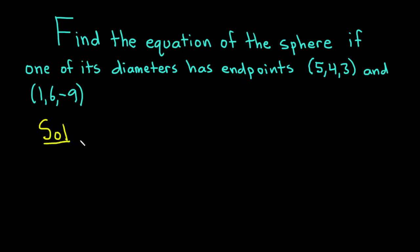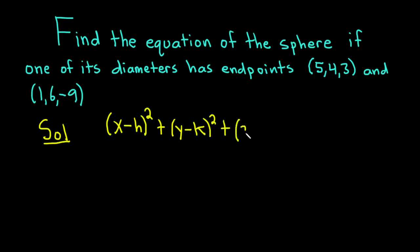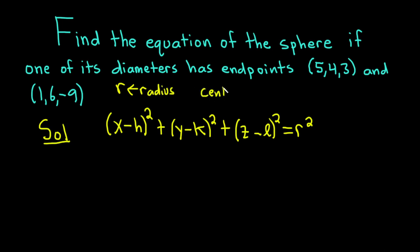Let's start by writing down the equation of a sphere. The equation of a sphere is: (x - h)² + (y - k)² + (z - l)² = r², where r is the radius of the sphere and the center of the sphere is the point (h, k, l).